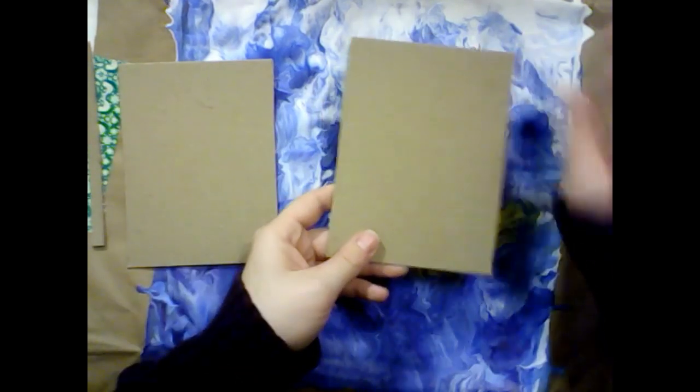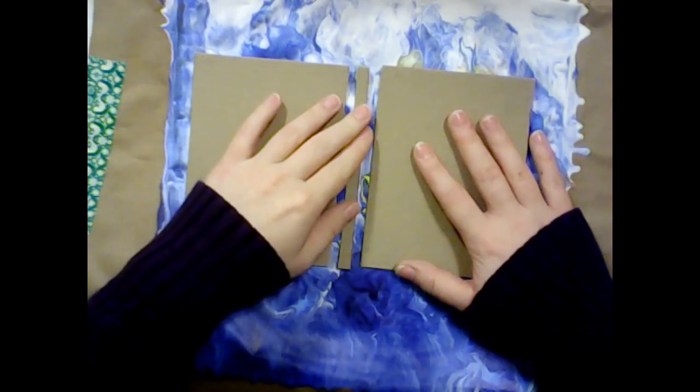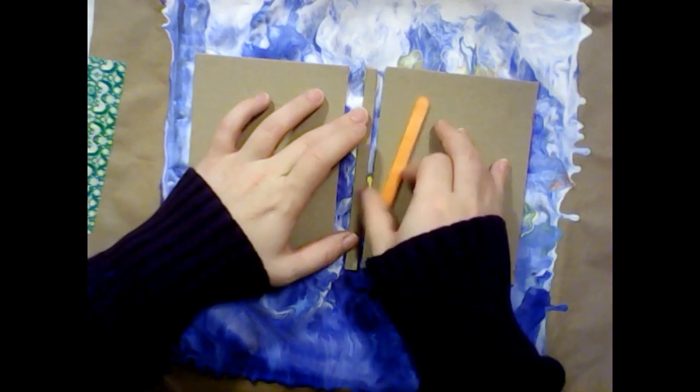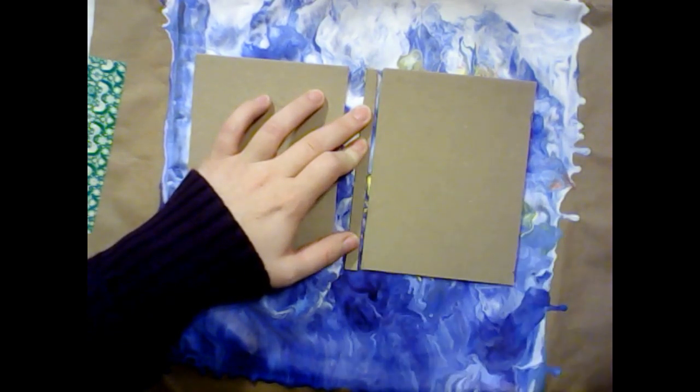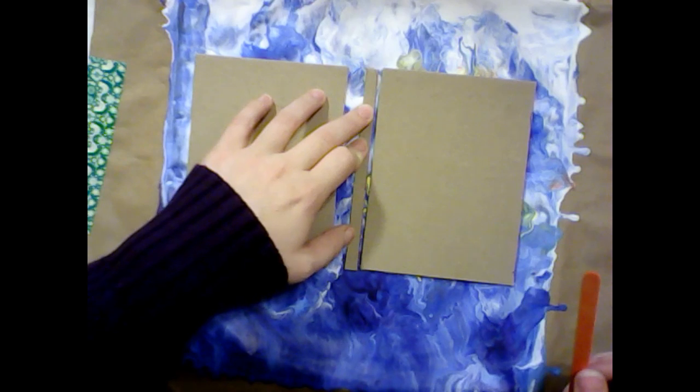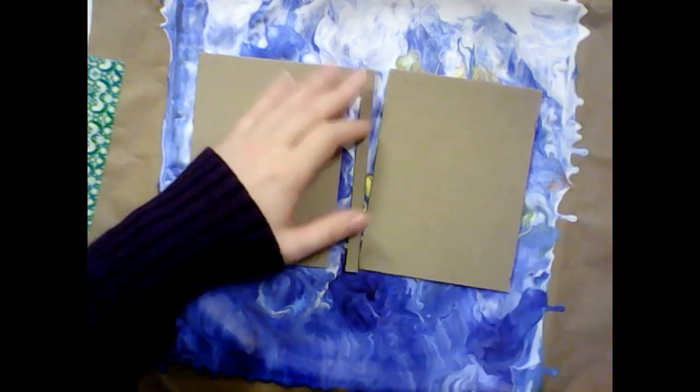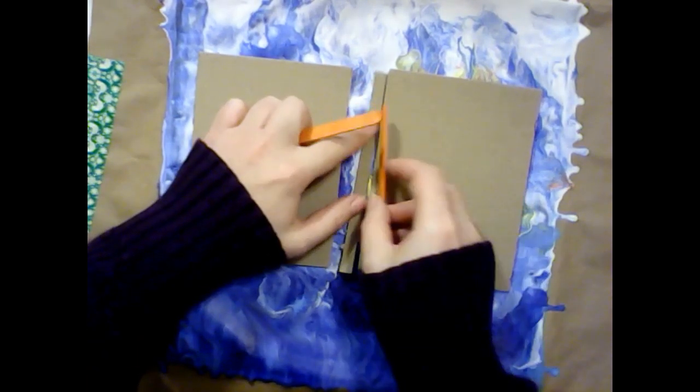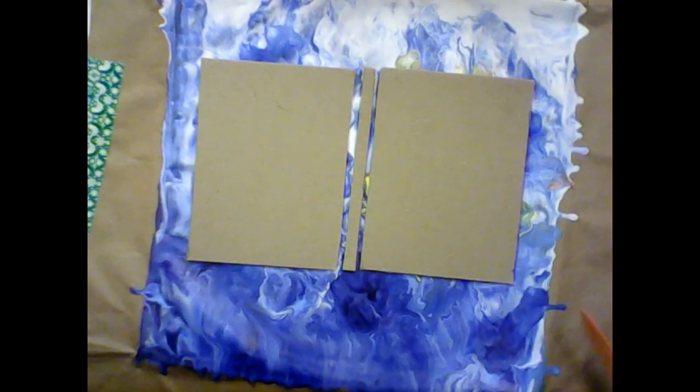What we're going to do is we're going to glue each of these sections down with the spine section in the middle and we are going to space them using a popsicle stick. So they're going to be very close together. One popsicle stick should be fine, the width of one popsicle stick in between them.